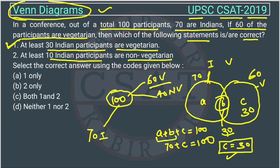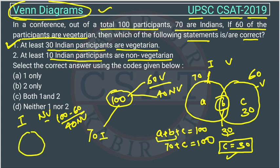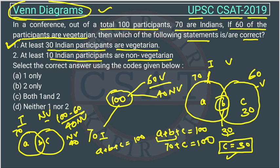Now the second statement: at least 10 Indian participants are non-vegetarian. We need to find the relationship between Indians and non-vegetarians. Since 60 are vegetarian, 100 minus 60 equals 40 are non-vegetarian. This circle represents Indians (70) and this circle represents non-vegetarians (40). Again, a plus b plus c equals 100, and a plus b equals 70.